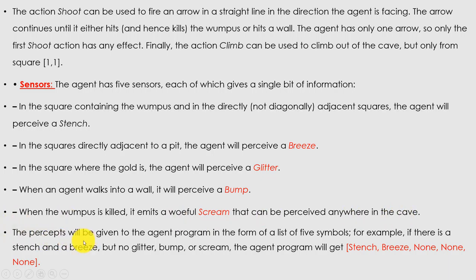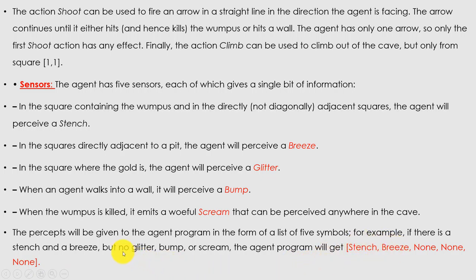The percept is given to the agent program as a list of five symbols. For example, if there is a stench and a breeze but no glitter, bump, or scream, the agent program receives [stench, breeze, none, none, none]. So stench and breeze are written in the list, and if there is no glitter, no bump, and no scream, we write none, none, none. This is the sequence of the five sensors.